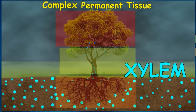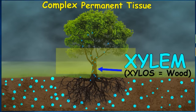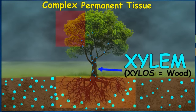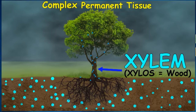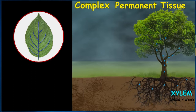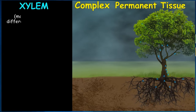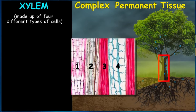Xylem is present where transporting of water is required. In a tree, it is mainly present in the wooden part, which serves as the transporting medium for water to travel from the roots to the leaves. Because of this tissue, water will also reach the topmost leaf, including all the parts of that leaf, as xylem is also present in the mid-rib of the leaf. This complex tissue named xylem is made up of four different types of cells.